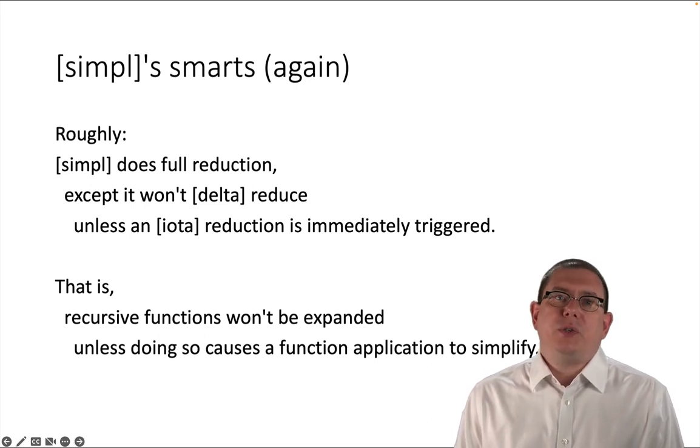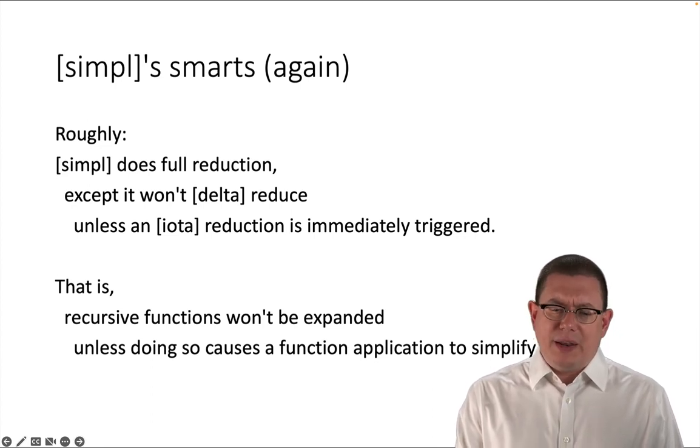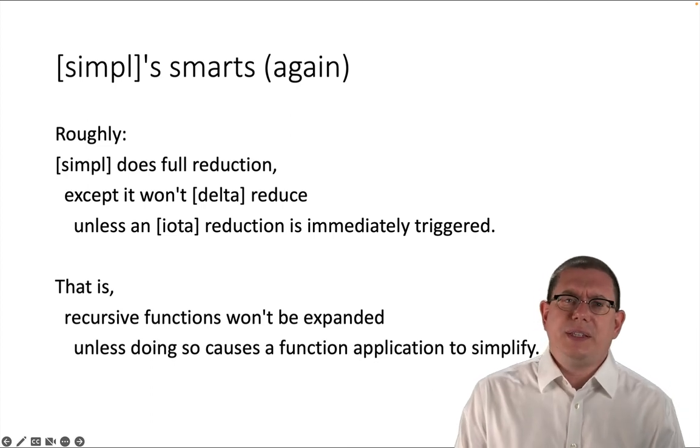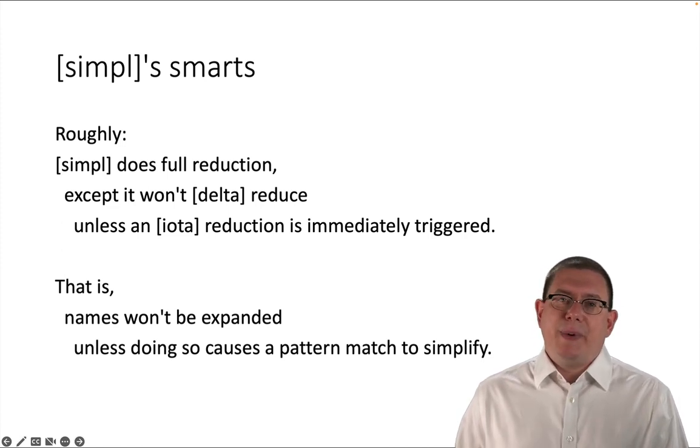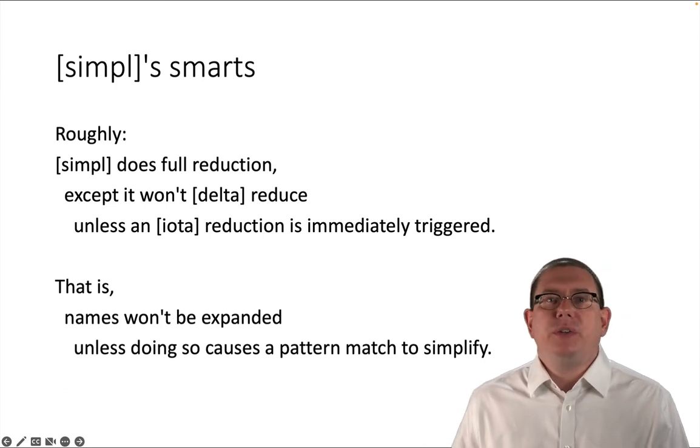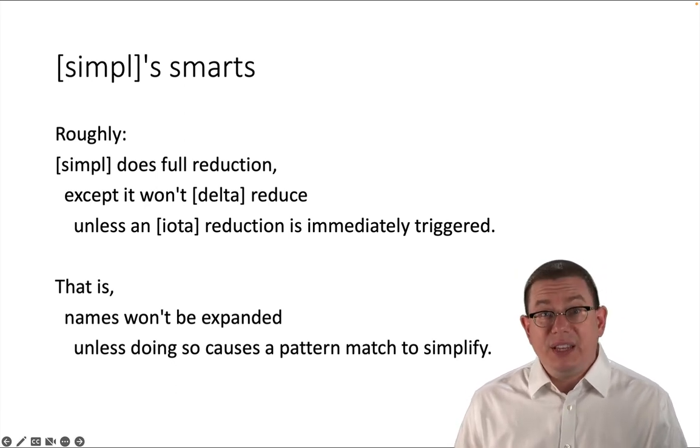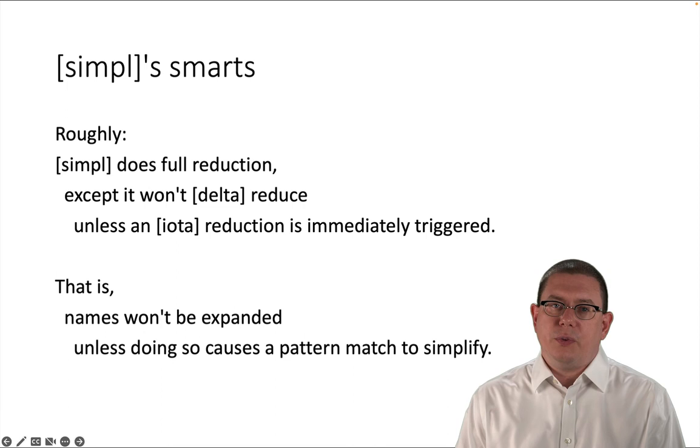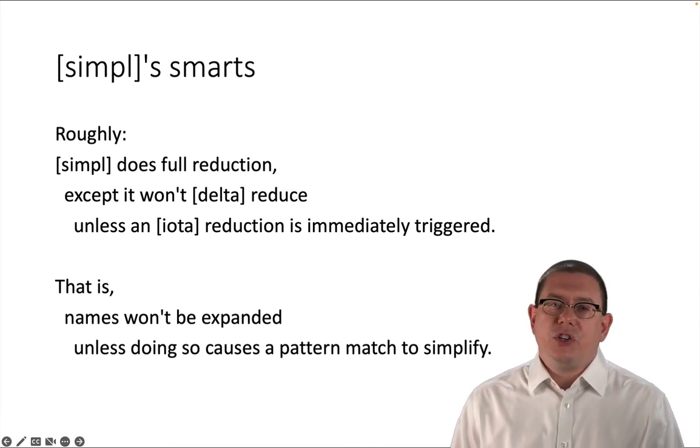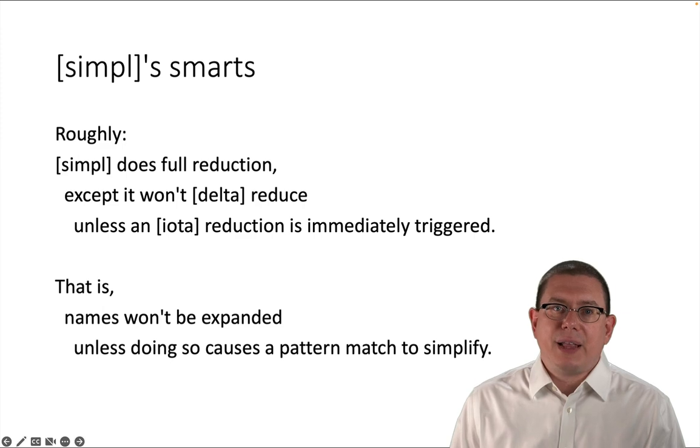Okay. So now if you go back to places where you thought maybe simple was going to work and it didn't do anything for you, it's generally going to be because one of these two things got violated. Either it required you to expand a recursive function, but actually that didn't cause anything to simplify. So simple was like, nope, not going to do that. Or simple didn't do what you thought it was going to do because expanding a name didn't cause a pattern match to immediately simplify. In which case it was like, nope, I'm not going to do that. I think that would just make the expression more complicated rather than easier for a human to read. You can put this to work in some of the exercises that you're trying in software foundations if you wish. Or if you want, you can just ignore this entire discussion. It won't come up too much more in software foundations. It's really for those who want to have a little bit better understanding of exactly what's going on with these tactics.